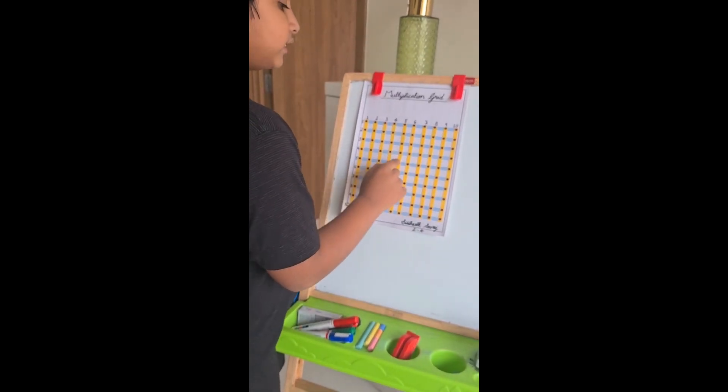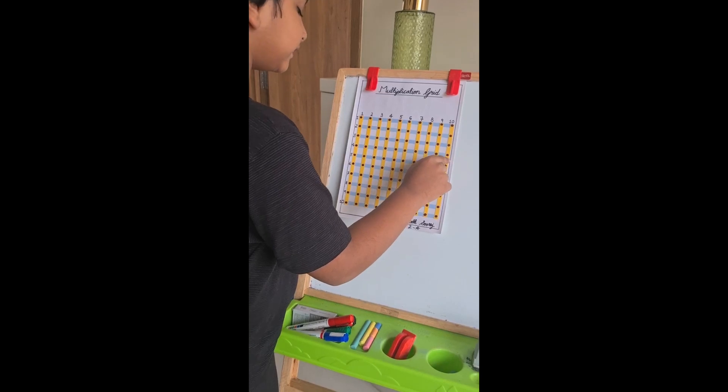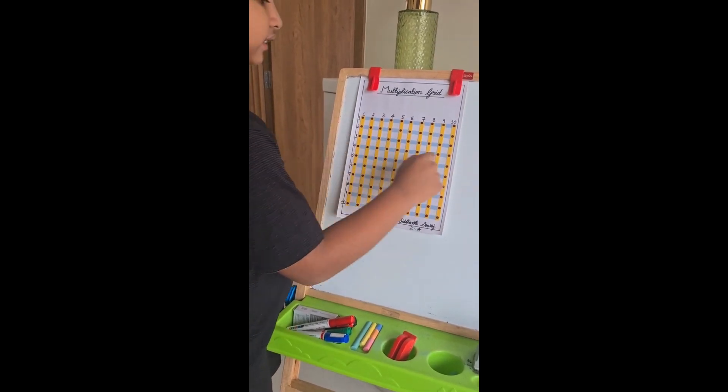Similarly, in the fourth row, there are 10 more bindis. So, 10 times 4 equals 40.